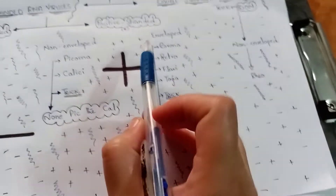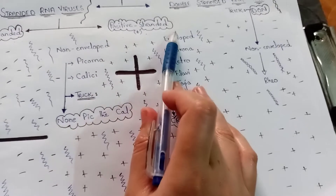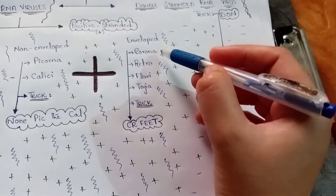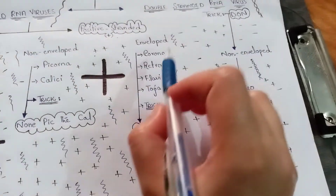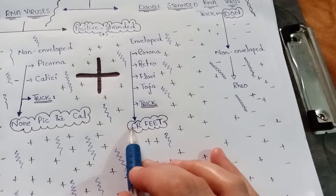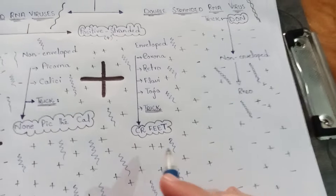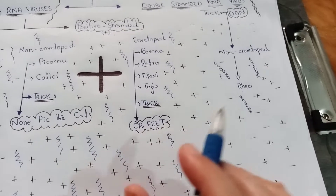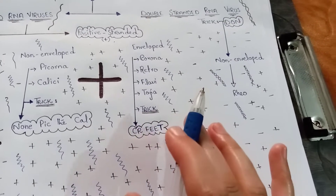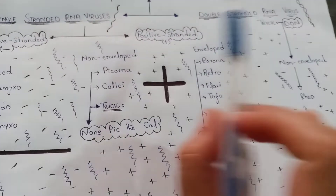Moving on to positive stranded RNA viruses, they are further divided into enveloped and non-enveloped. For the enveloped ones, the trick is 'CR FEET': C for Corona, R for Retro, F for Flavi, and the double E denotes Toga — these are all enveloped. So Corona, Retro, Flavi, and Toga are enveloped positive stranded single stranded RNA viruses.